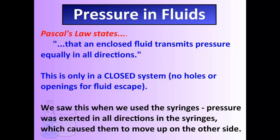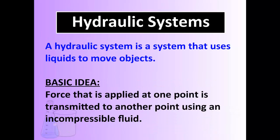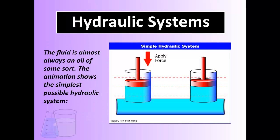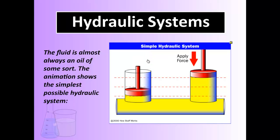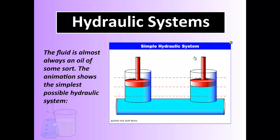It has to be a closed system. This is seen in hydraulic systems — systems that use liquids to move objects. The basic idea is you apply a force to one point and that force is transmitted to another point using an incompressible fluid. If you apply a force, the fluid transmits it equally through both areas, so you see an equal amount of movement on either side of the piston.